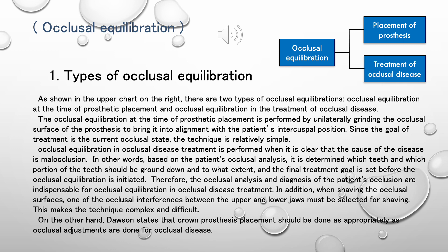Types of Occlusal Equilibration: As shown in the upper chart on the right, there are two types of occlusal equilibrations. The first is occlusal equilibration at the time of prosthetic placement, and the second is occlusal equilibration in the treatment of occlusal disease. The occlusal equilibration at the time of prosthetic placement is performed by unilaterally grinding the occlusal surface of the prosthesis to bring it into alignment with the patient's intercuspal position.